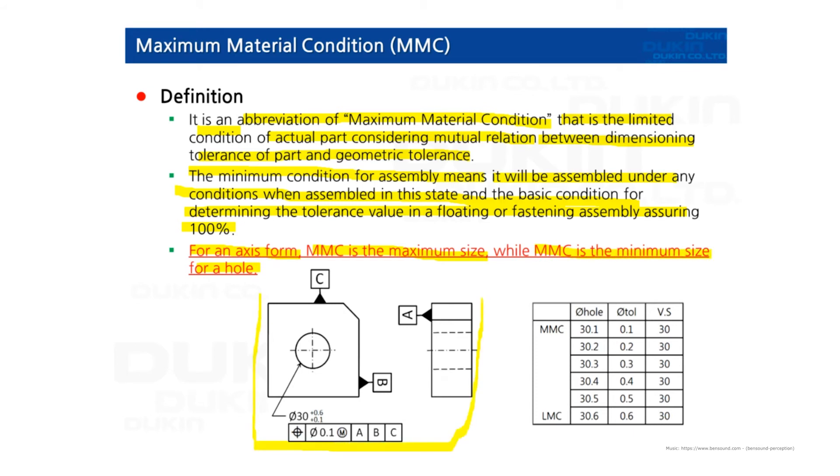So here is a practice right here. And this is hole type product. And the tolerance here, 30 diameter. And the maximum allowable size is 30.6 and the minimum is 30.1.